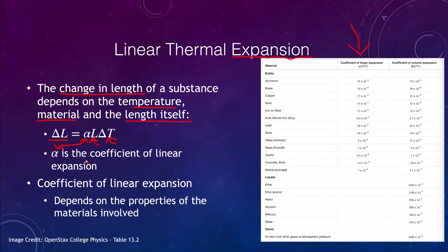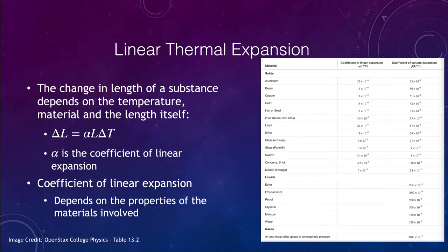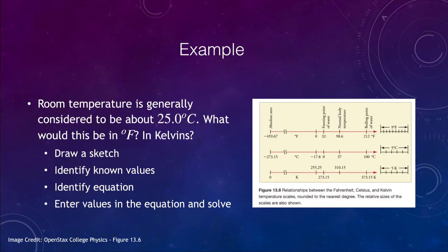Looking at quartz versus lead in the table, there is a very big difference, meaning that for the same temperature change applied to the same length of material, the lead will expand or contract much more. That coefficient simply depends on the chemical and physical properties of the material undergoing expansion. Let's now look at some examples, including a temperature conversion.